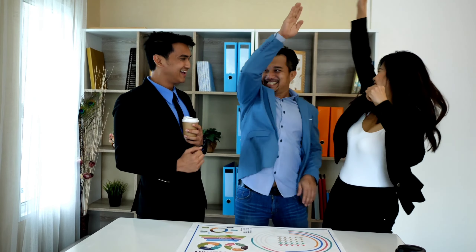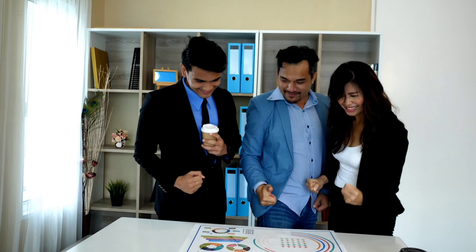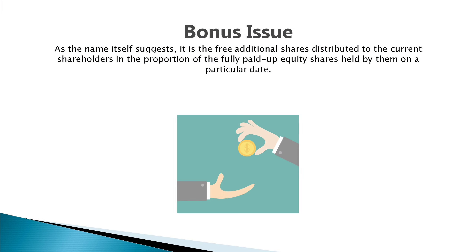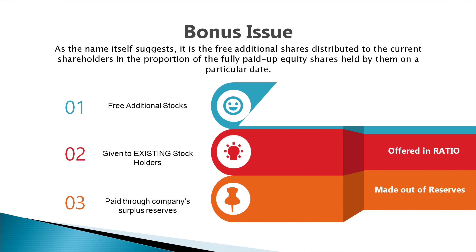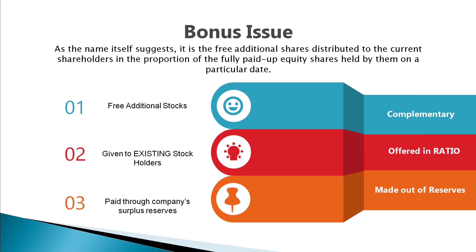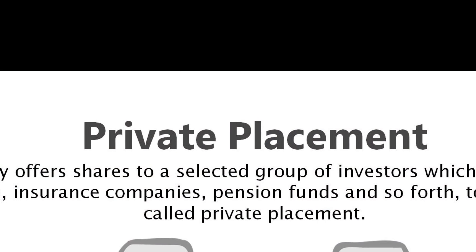Then comes investors' favorite — the bonus issue. As the name suggests, it refers to free additional shares distributed to current shareholders in the proportion of the fully paid-up equity shares held by them on a particular date. These shares are issued out of the company's free reserves. A major difference between a bonus issue and a rights issue is that bonus issues are completely free in the hands of the investor.